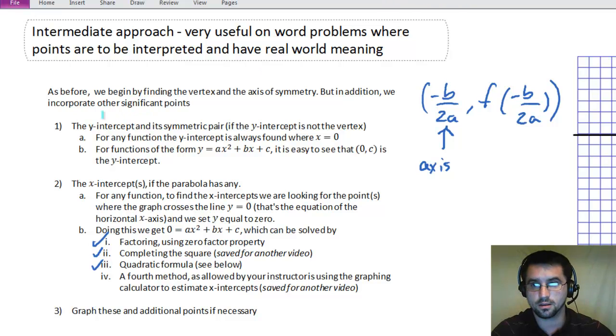And if the y intercept is not the vertex, we get a symmetric pair. So how do we get the y intercept? Set x equal to zero. And so it's always going to be zero, comma, c.